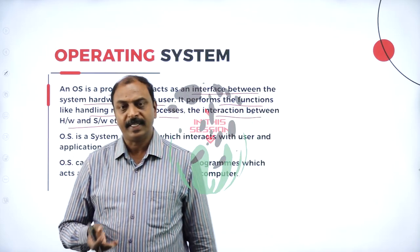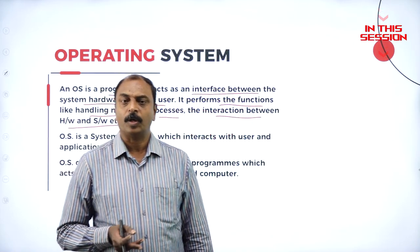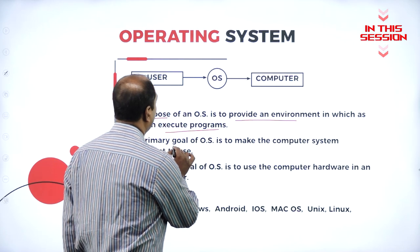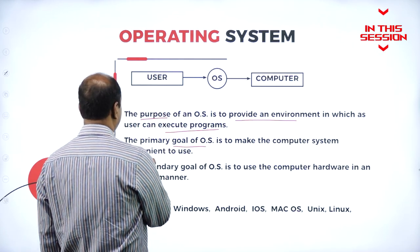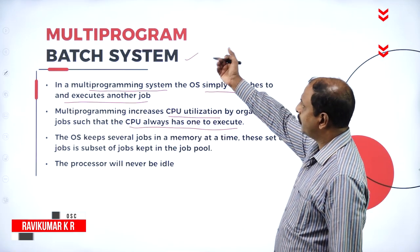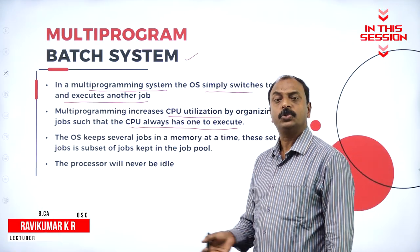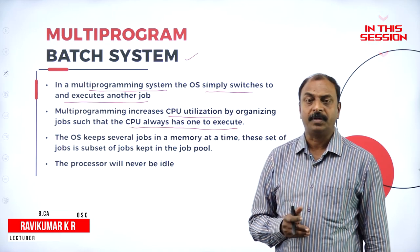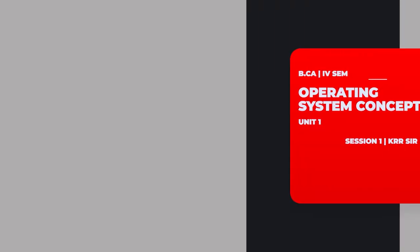An operating system is the base for a computer system for proper functioning. The goal of an operating system is to make the computer system convenient to use. In the concept of multi-programming, the CPU switches over between a number of jobs in a queue.